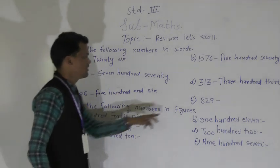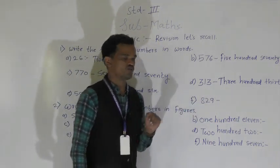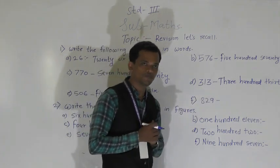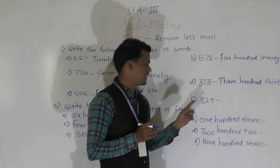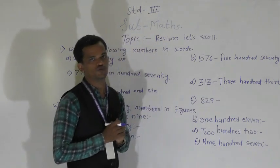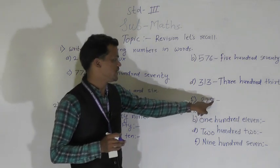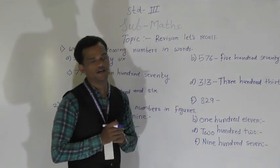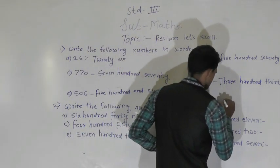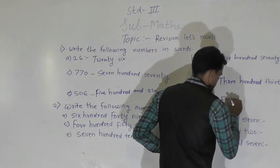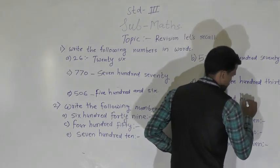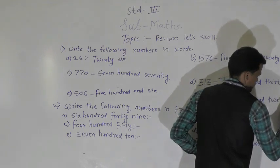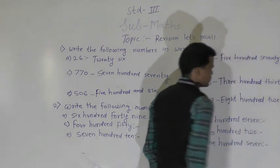Next number: 829. First identify this number. 9 comes at the ones place, 2 comes at the tens place, and 8 comes at the hundreds place. So this number is 829. Write the spelling of this number: 829.